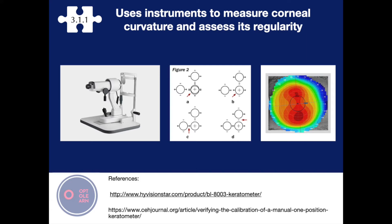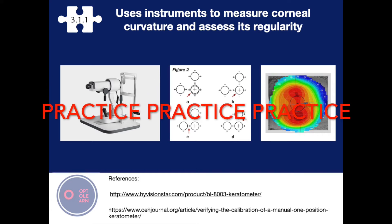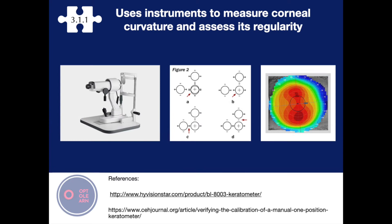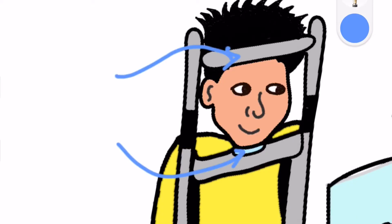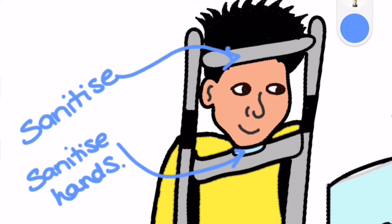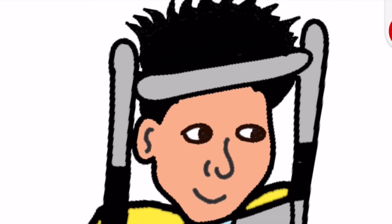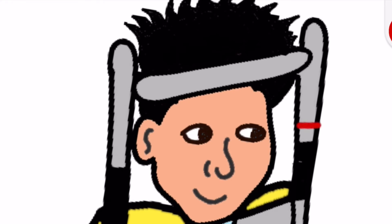Make sure that you practice keratometry lots in practice before sitting your OSCE. When performing keratometry, remember some key points: always clean the chin rest and head rest and sanitize your hands, and align the patient's outer canthus with the line on the keratometer.